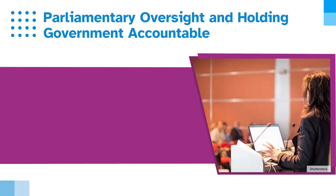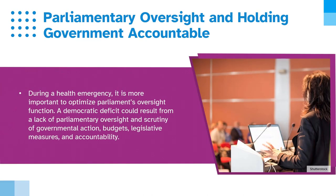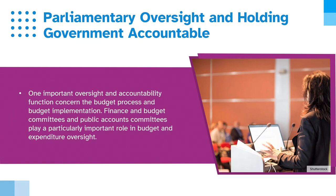During a health emergency, it is more important to optimise parliament's oversight function. A democratic deficit could result from a lack of parliamentary oversight and scrutiny of government action, budgets, legislative measures, and accountability. One important oversight and accountability function concerns the budget process and budget implementation. Finance and budget committees and public accounts committees play a particularly important role in budget and expenditure oversight.